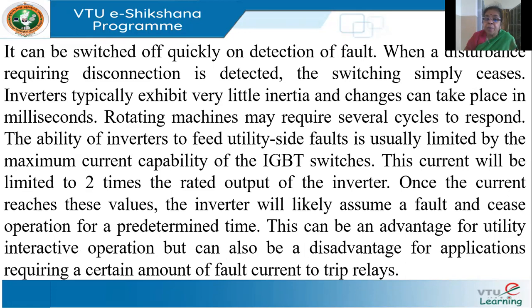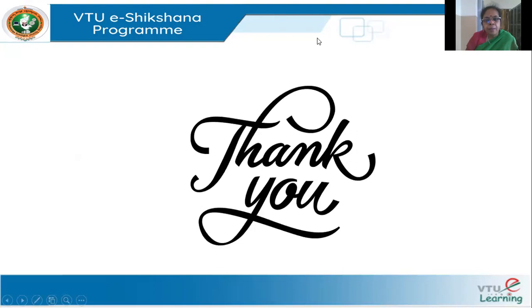In this session, we saw the three main methods of interfacing DG to the utility: synchronous machines, induction machines, and power converters. We also saw some of the problems which these interfaces may create.